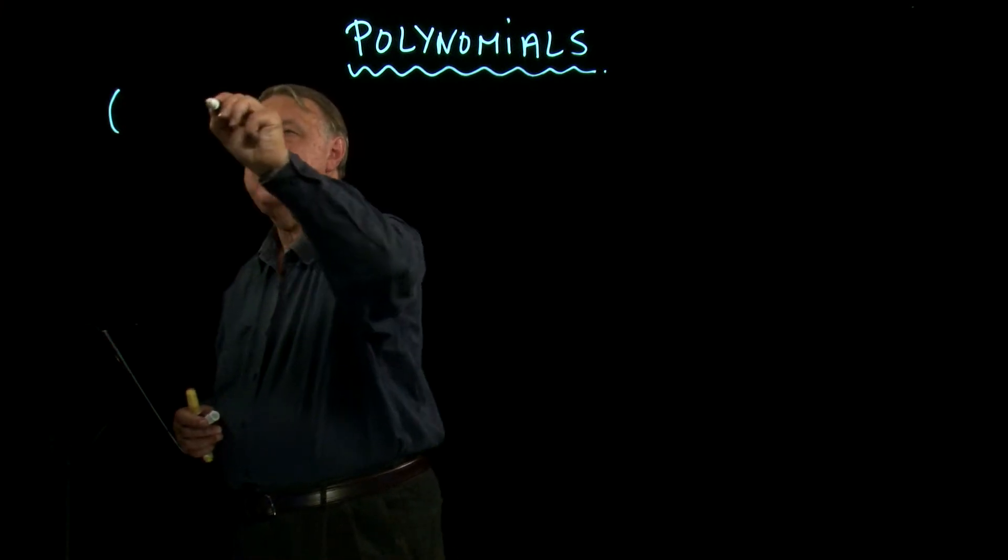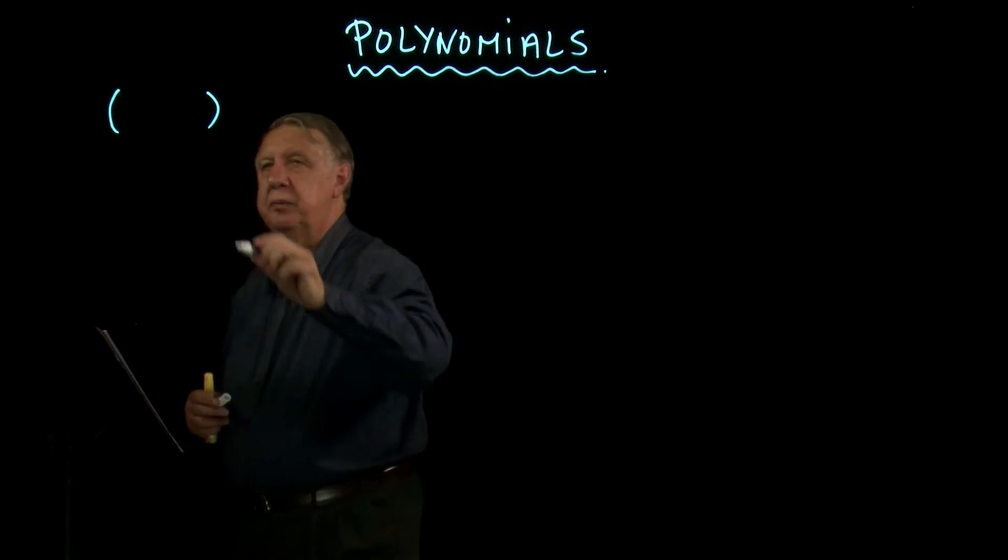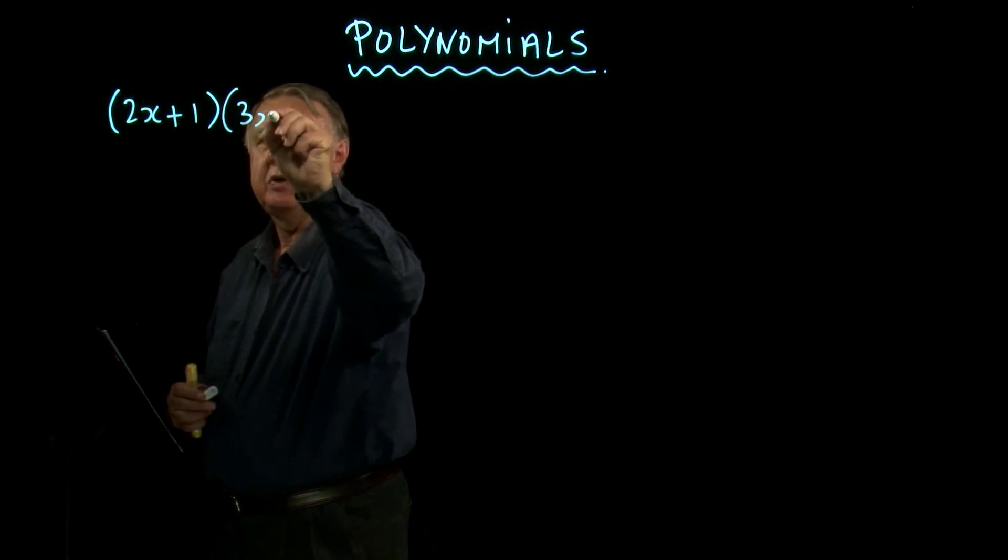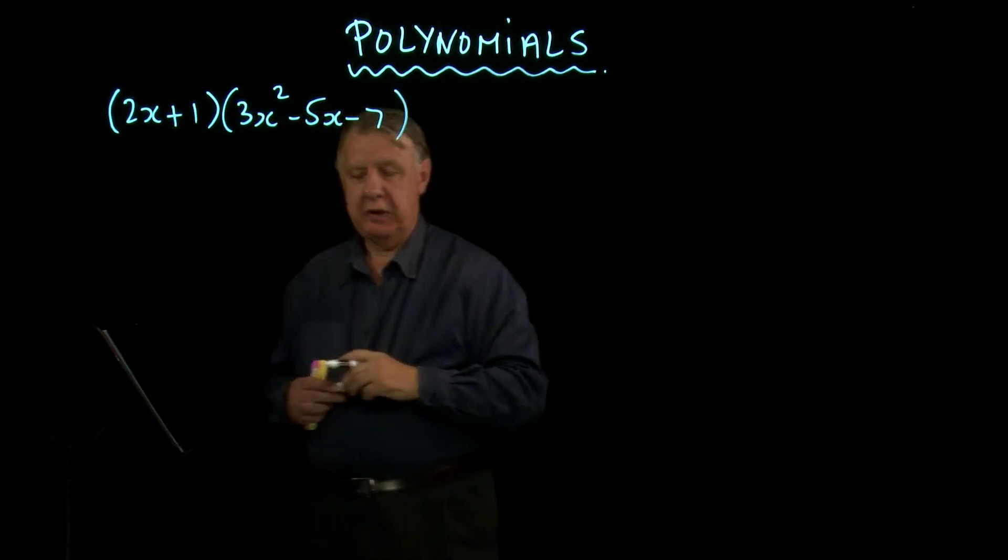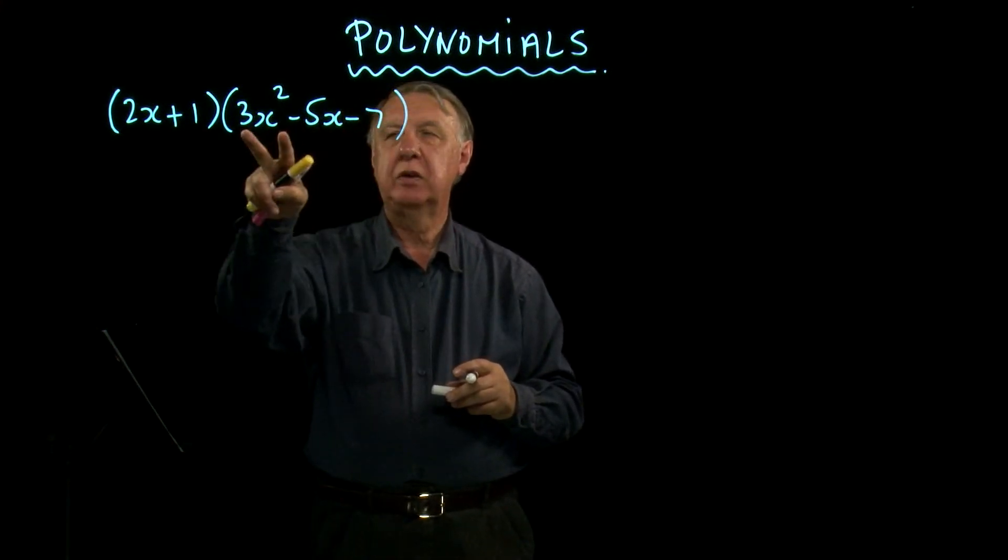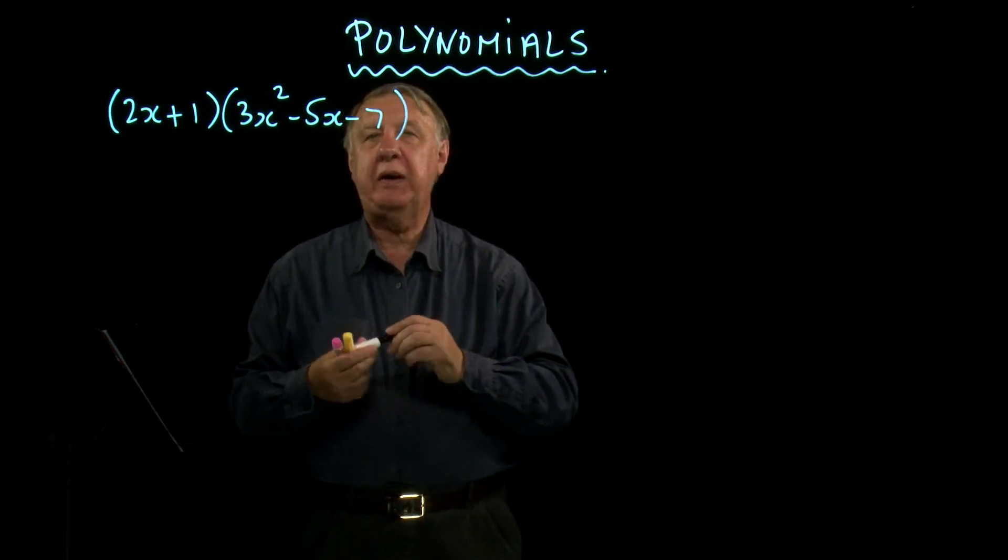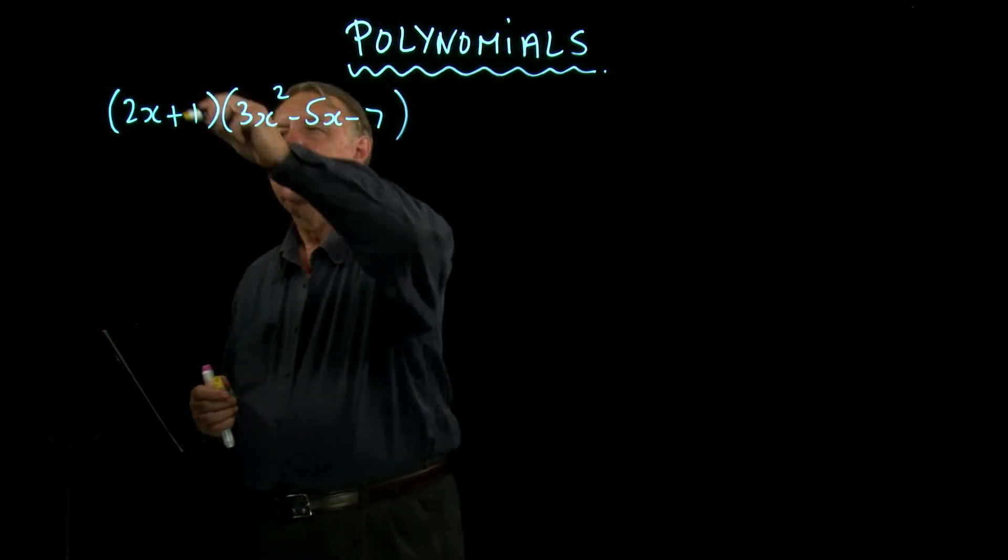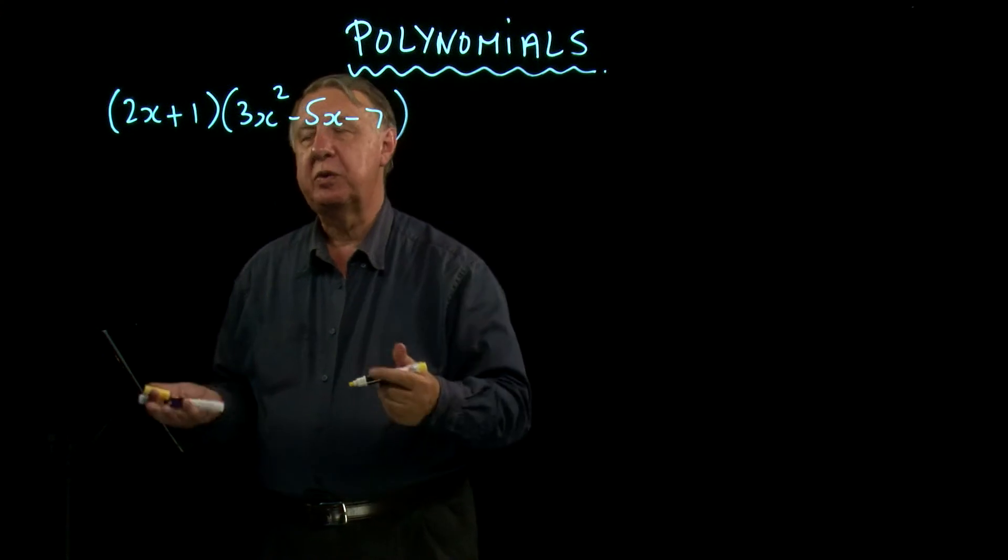When you're doing basic multiplying out, let's have a look at an example. So there we have a linear bracket multiplied by a quadratic bracket. The rules of expanding brackets, the distributive laws, are very simple. You take each term from each bracket and multiply them together.